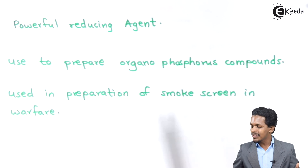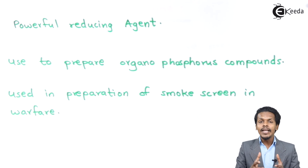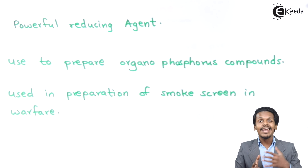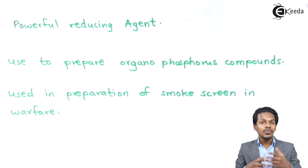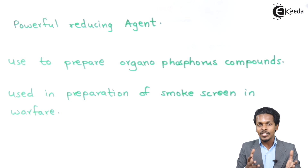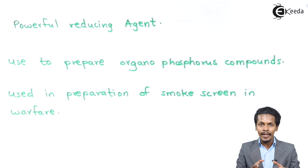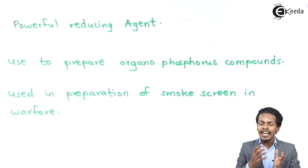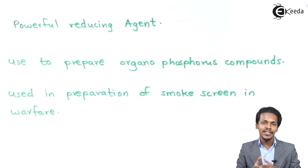Phosphine is also used in the preparation of smoke screens in warfare. Whenever phosphine reacts with air it produces smoke, because it is very flammable and explosive in nature. This smoke is used in warfare to tackle enemies.